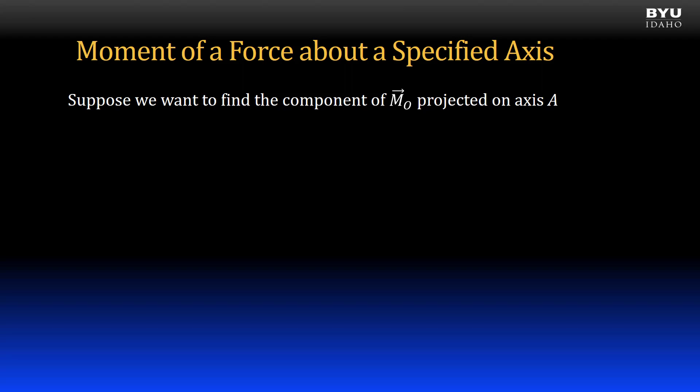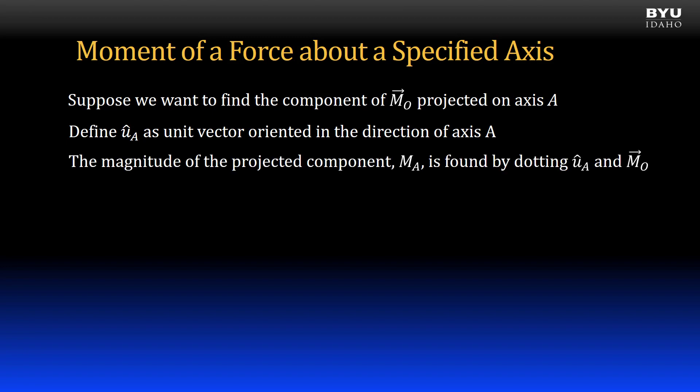Suppose that we want to find the component of a moment vector MO projected on an axis we'll call A. We define UA as a unit vector oriented in the direction of axis A. The magnitude of the projected component MA is found by dotting unit vector UA and moment vector MO.